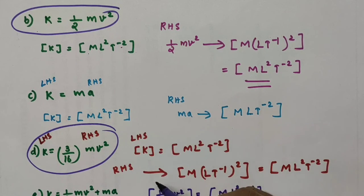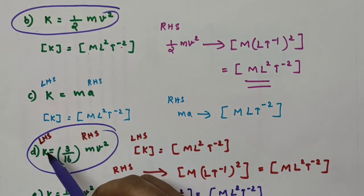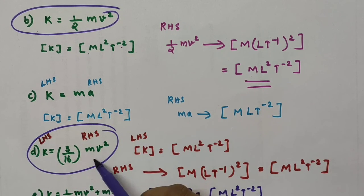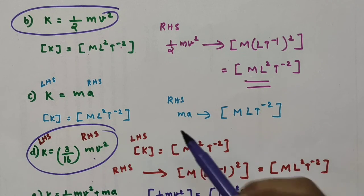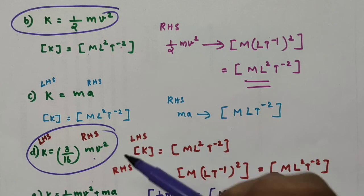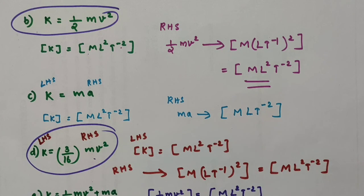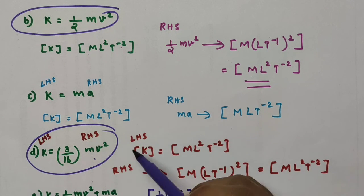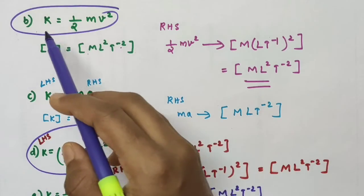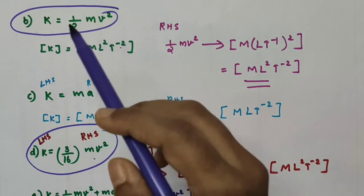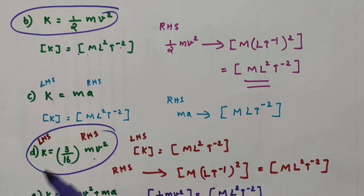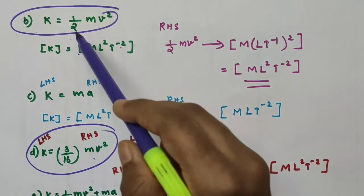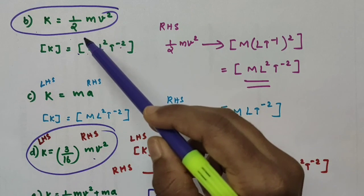So only equations B and D — that is K = ½MV² and K = (3/16)MV² — are dimensionally correct. However, if an equation is dimensionally correct, that doesn't mean it is exactly correct. To confirm the right formula, we check the definition of kinetic energy. As per the definition, equation B, K = ½MV², is the correct formula for kinetic energy.